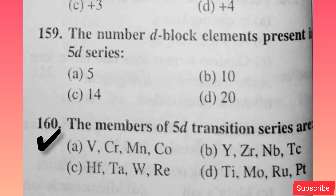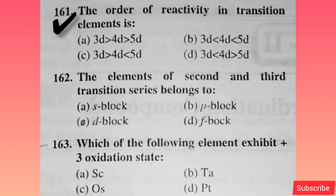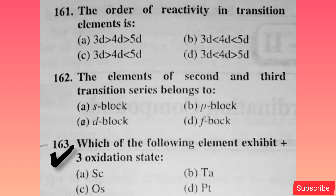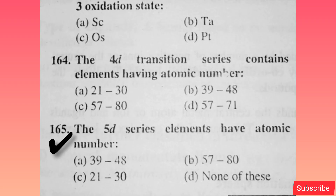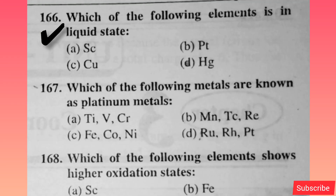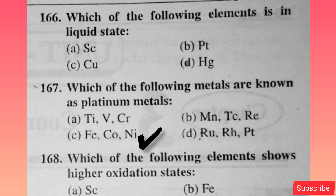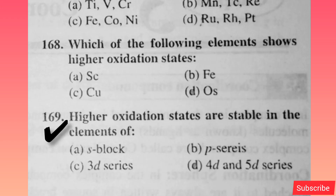The members of the 5D transition series are — option C is correct. The order of reactivity in transition elements is — option A is correct. The elements of second and third transition series belong to — option C is correct. Which of the following elements exhibit +3 oxidation state? Option A is correct. The 4D transition series contains elements having atomic number — option B is correct. The 5D series elements have atomic number — option B is correct. Which of the following elements is in liquid state? Option D is correct. Which of the following metals are known as platinum metals? Option D is correct. Which of the following elements shows a higher oxidation state? Option D is correct. Higher oxidation states are stable in elements of 4D and 5D series — option D is correct.